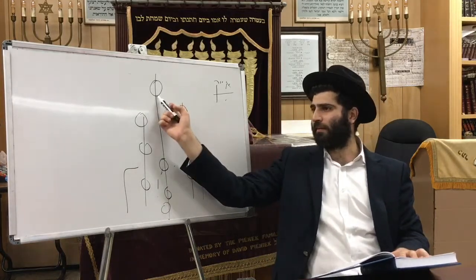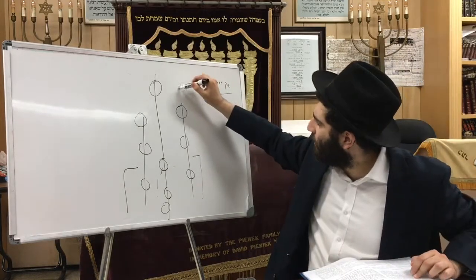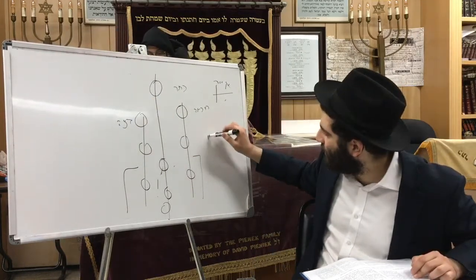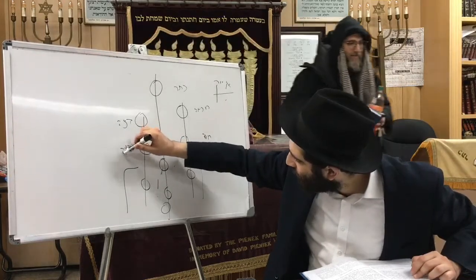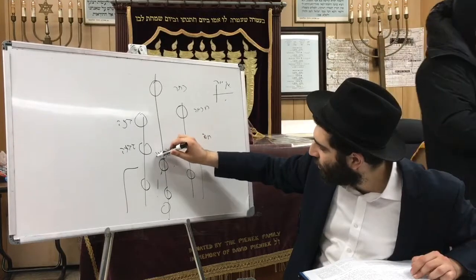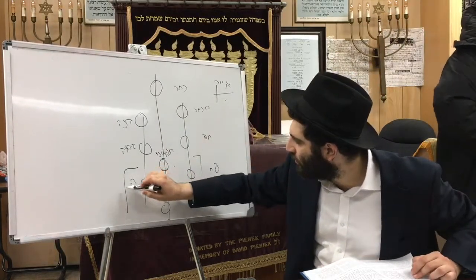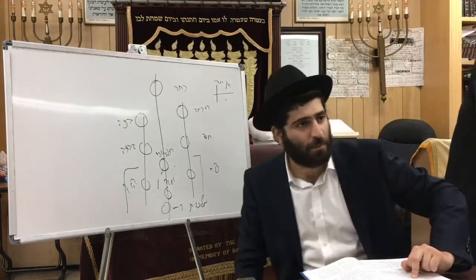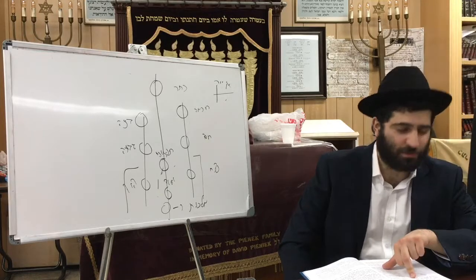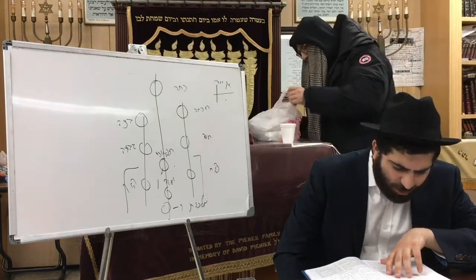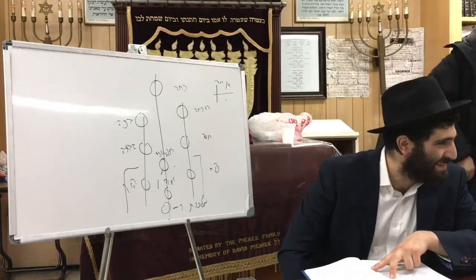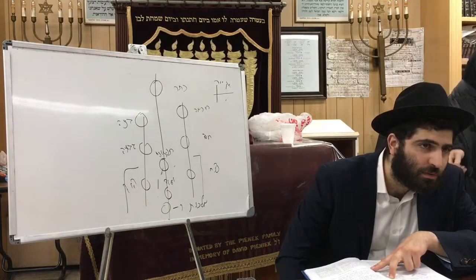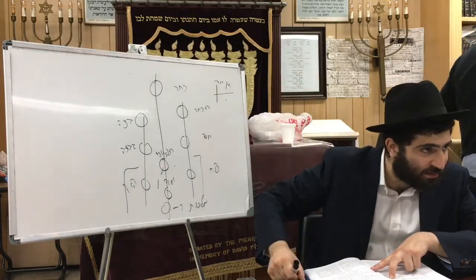AK has ten sefirot: Keter, Chochmah, Binah - this is Tiferet, that's our father Yaakov - Netzach, Hod, Yesod, and Malchut. AK is such a big system, such a big world, it fills the whole void - from the beginning of the Chalal until the end of the Chalal. That's how big it is.